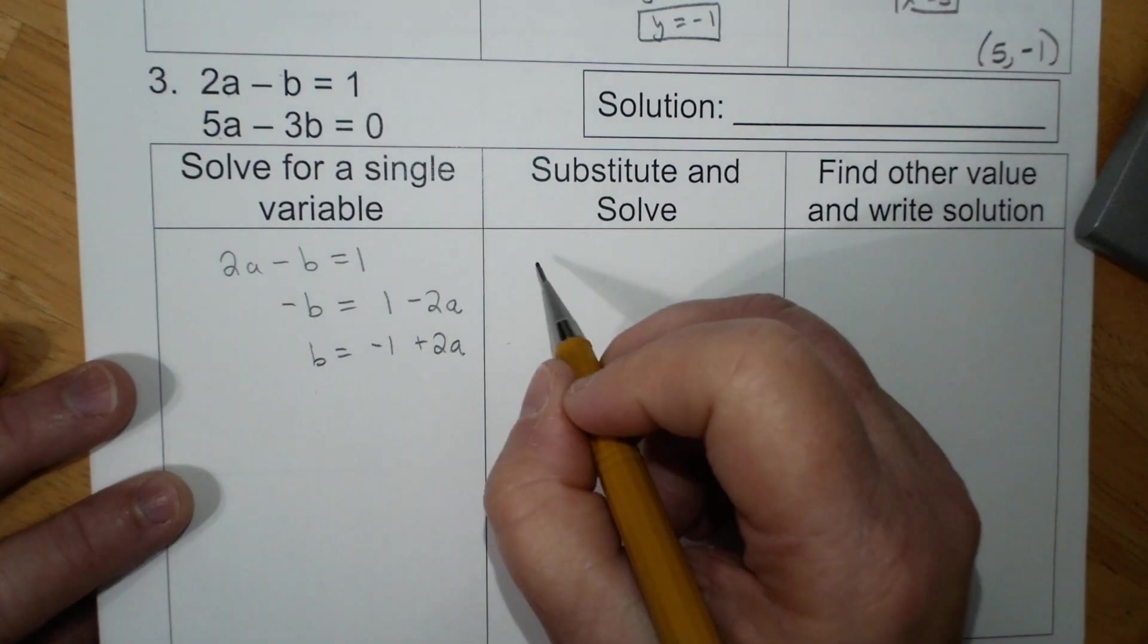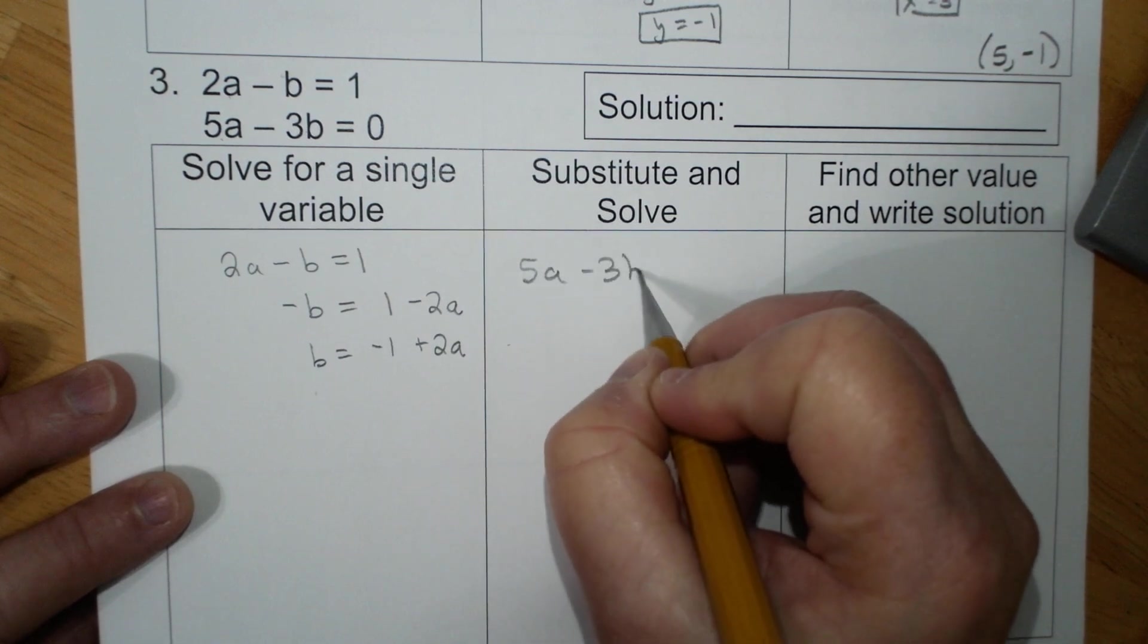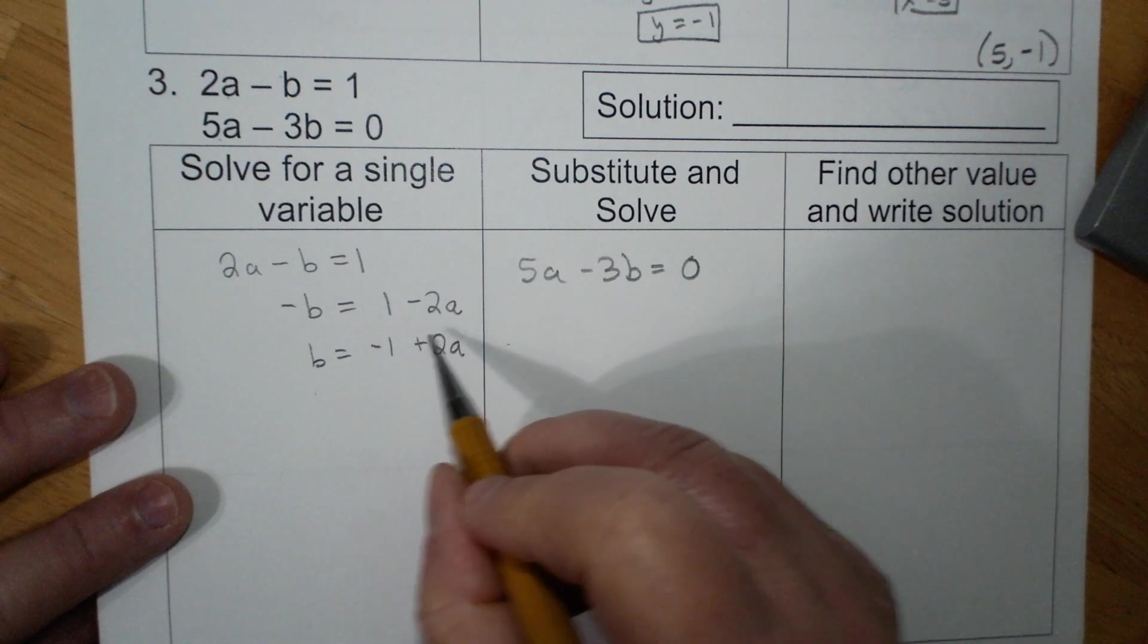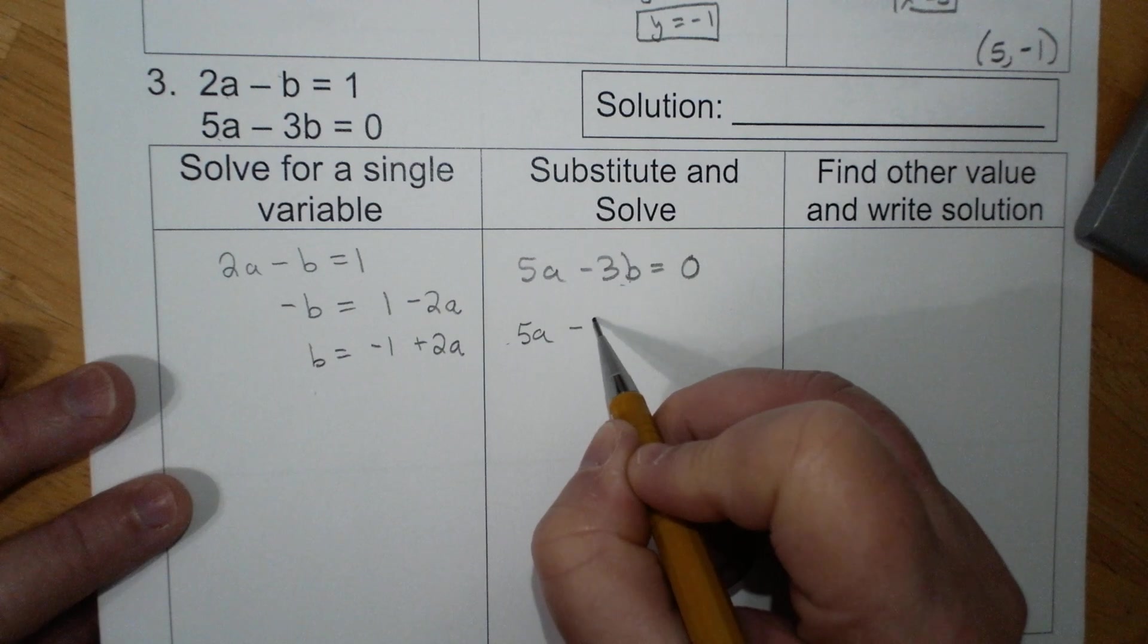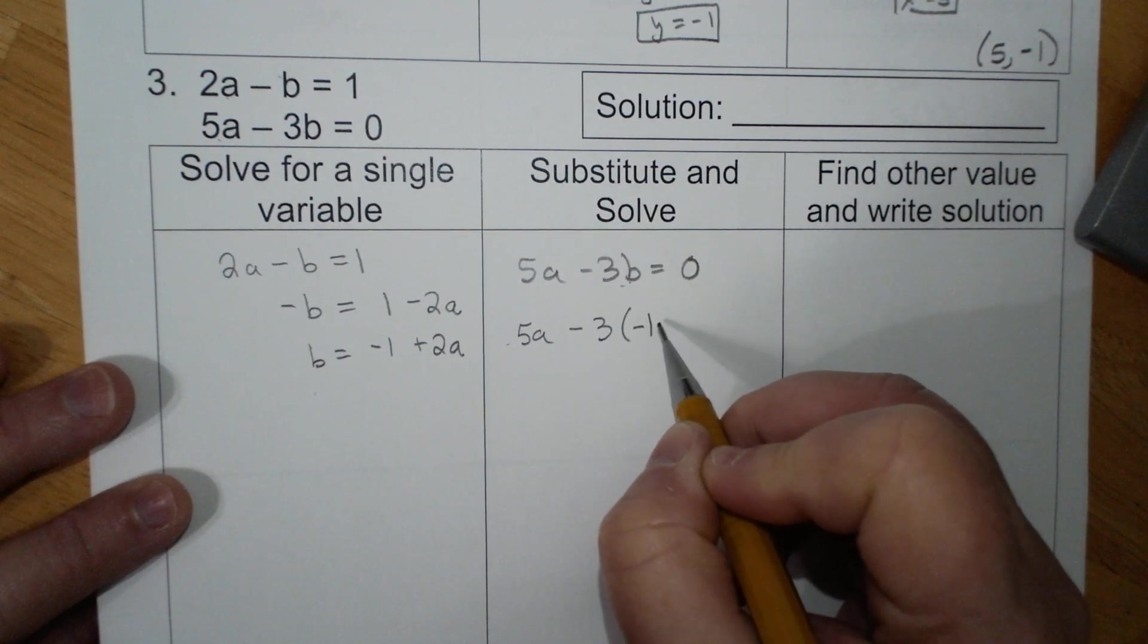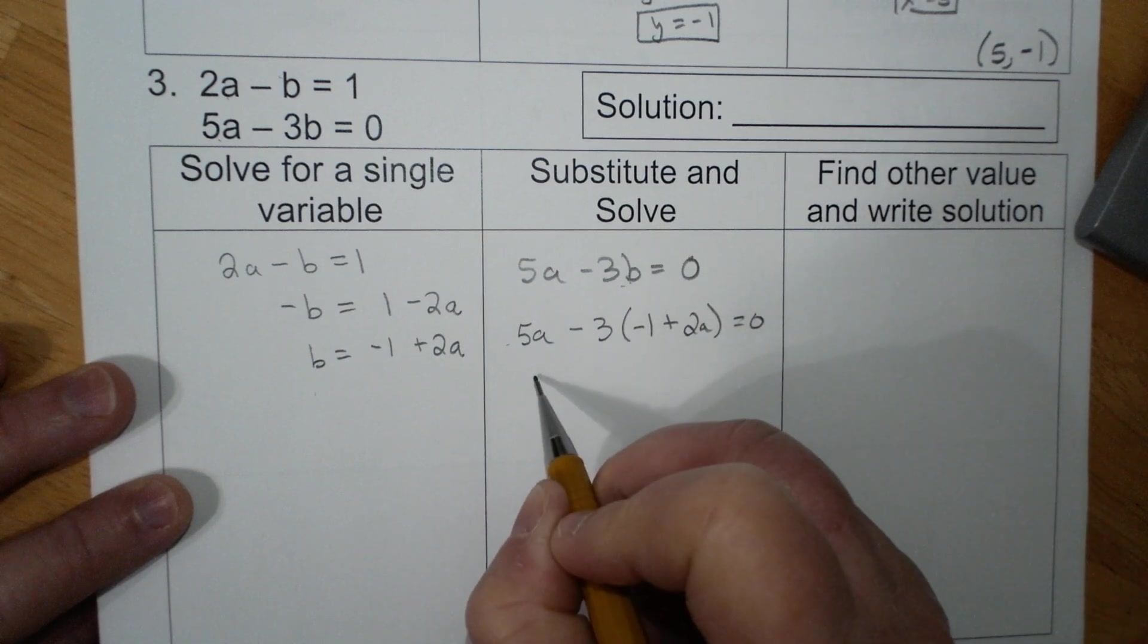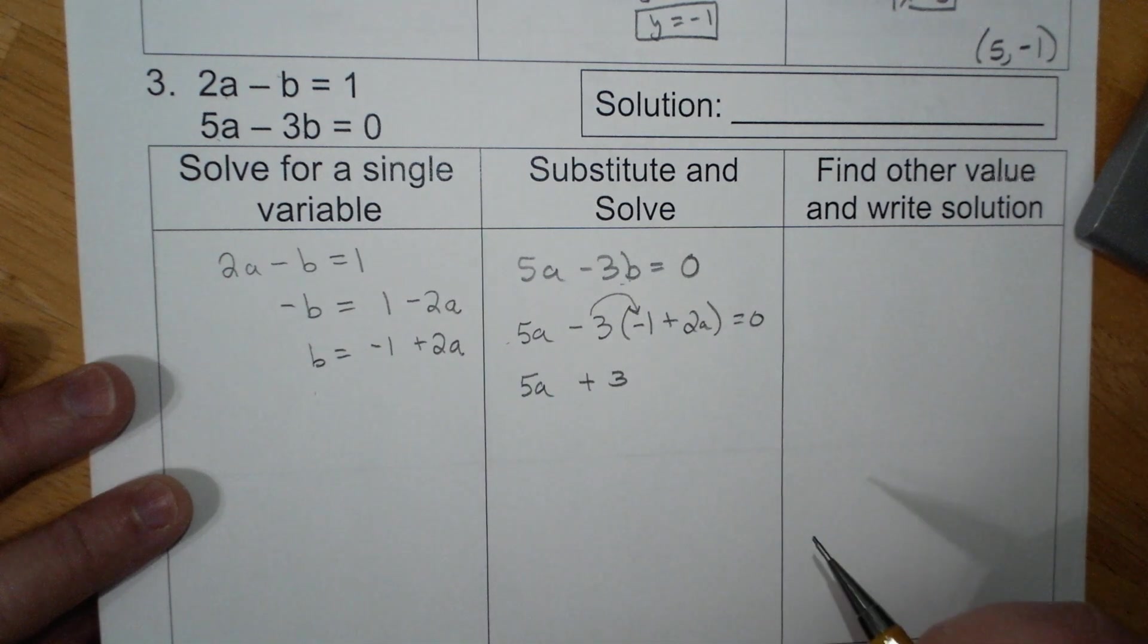5a minus 3B equals 0. I'm substituting in for the B. 5a minus 3 times negative 1 plus 2a equals 0. 5a plus 3 because that's a negative 3 being distributed minus 6a equals 0.